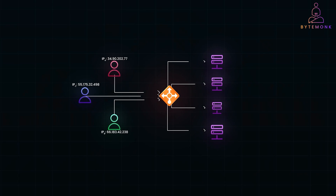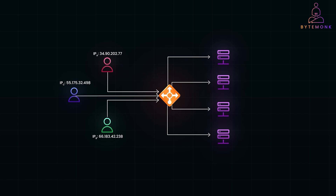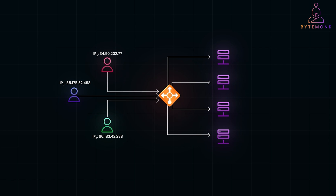A reverse proxy is a server or software that sits between clients and backend servers, intercepting client requests and forwarding them to the appropriate backend server. So when a request comes in, the reverse proxy figures out which server should handle it, forwards the request, and sends the response back to the user, all without the user ever knowing what's happening behind the scenes.